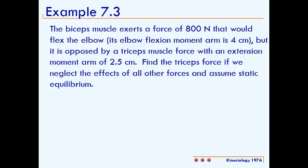This is Example 7.3. The biceps muscle exerts a force of 800 newtons that would flex the elbow; its elbow flexion moment arm is 4 centimeters, but it is opposed by a tricep muscle force with an extension moment arm of 2.5 centimeters. Find the triceps force if we neglect the effects of all other forces and assume static equilibrium.